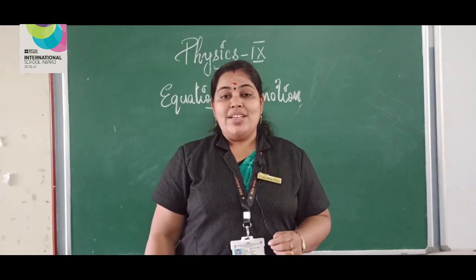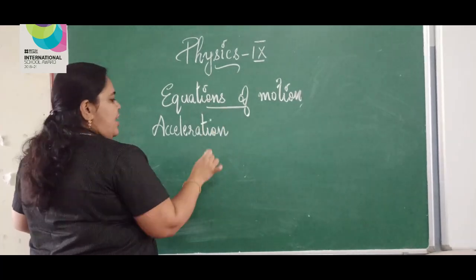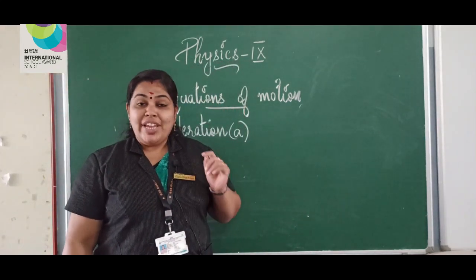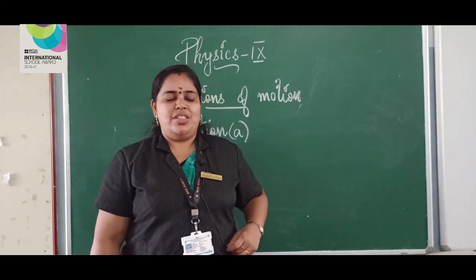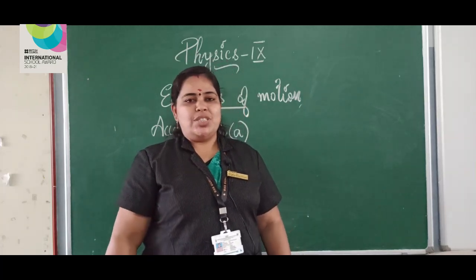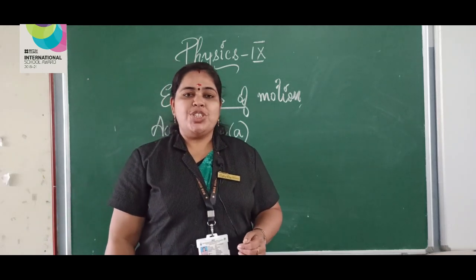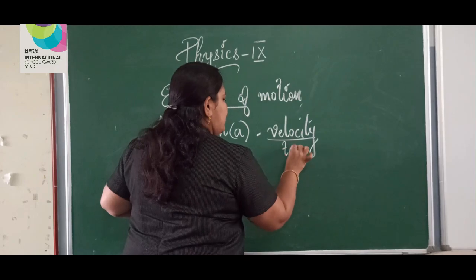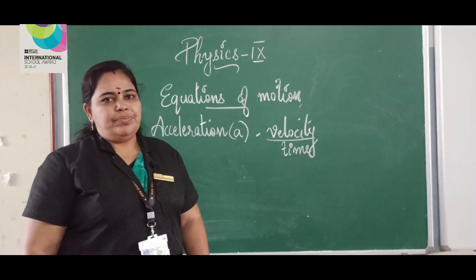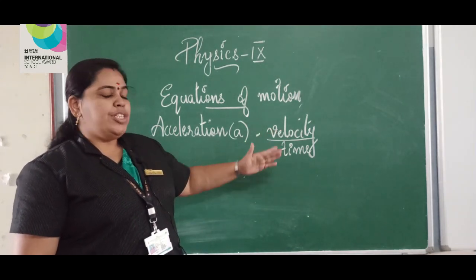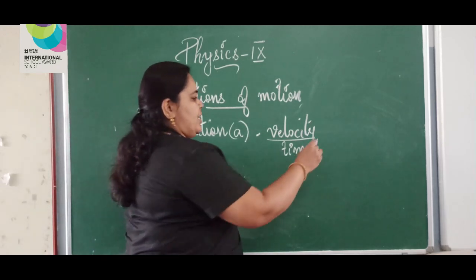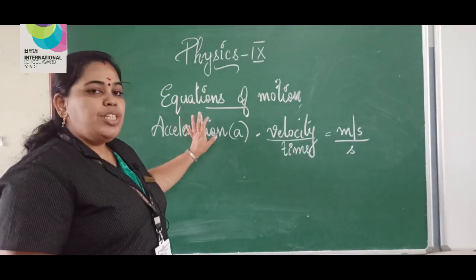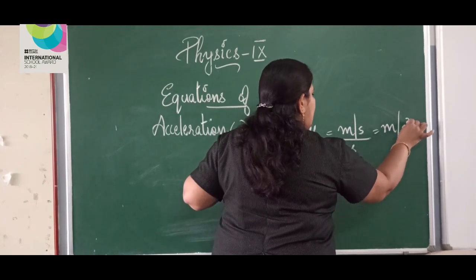The next term is acceleration, denoted by the small letter 'a'. What is acceleration? The rate of change of velocity is known as acceleration. Acceleration is equal to velocity divided by time. The unit of velocity is metre per second, and the unit of time is second, so we can write the unit of acceleration as metre per second square.